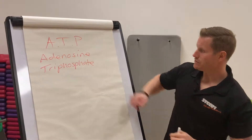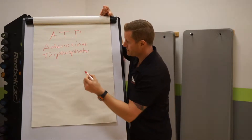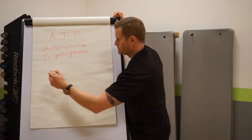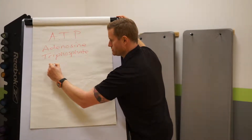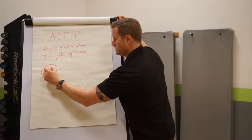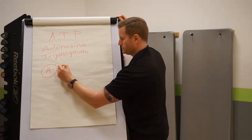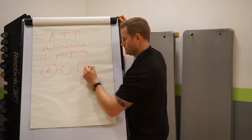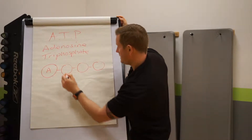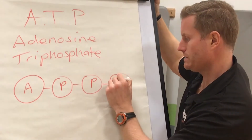Adenosine triphosphate. So what that is is a molecule basically made up of smaller molecules. So we have adenosine and then three phosphates.